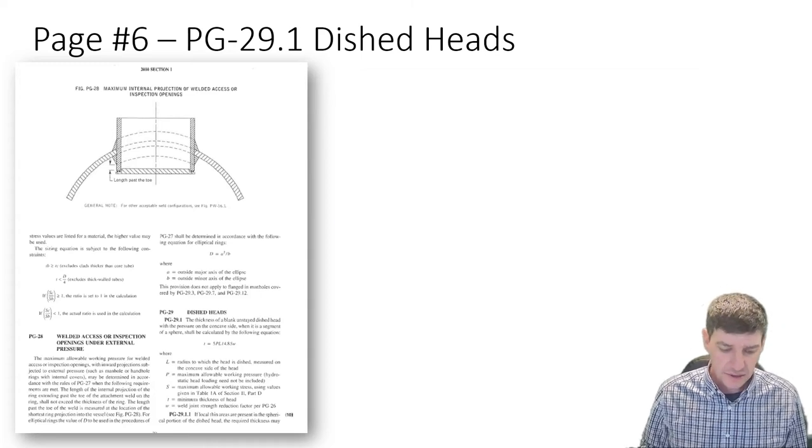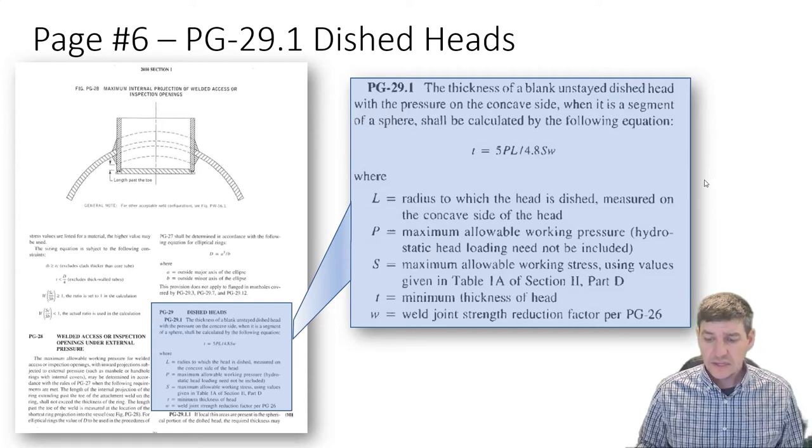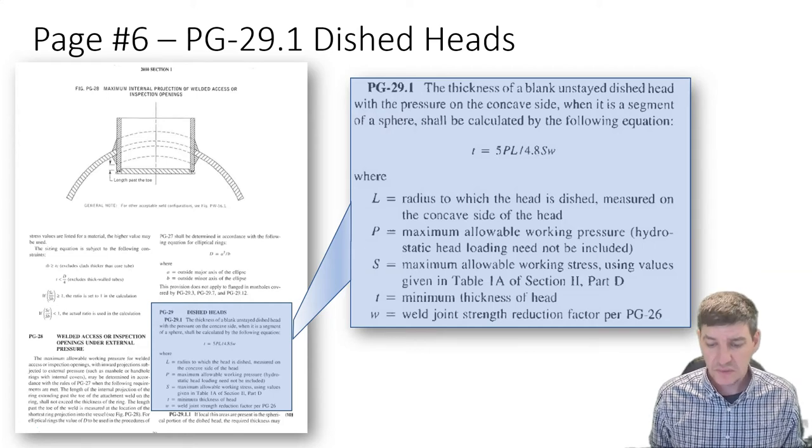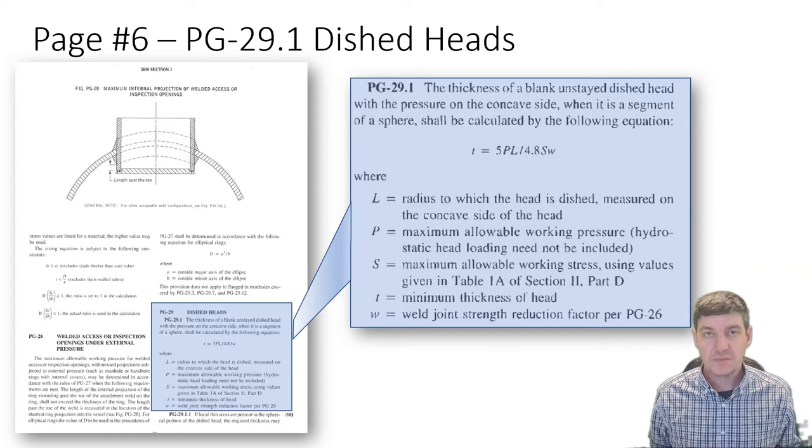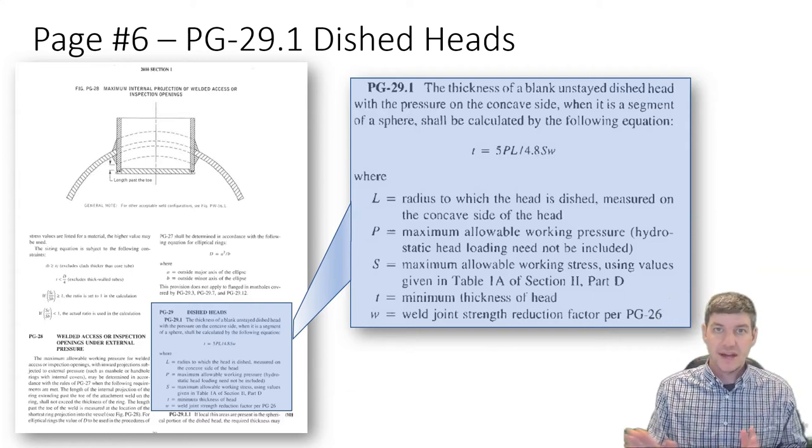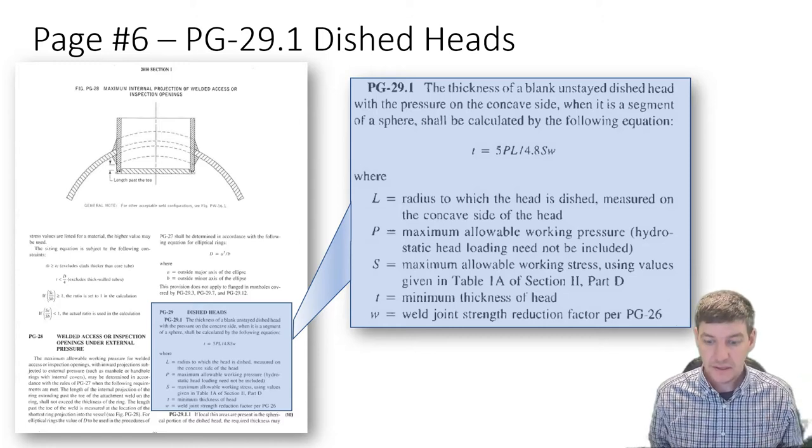At the bottom we have a section on dished heads. It says the thickness of a blank, unstayed, dished head with pressure on the concave side. Some of those terms: blank meaning it doesn't have any other structure built onto it, just made out of a flat plate.